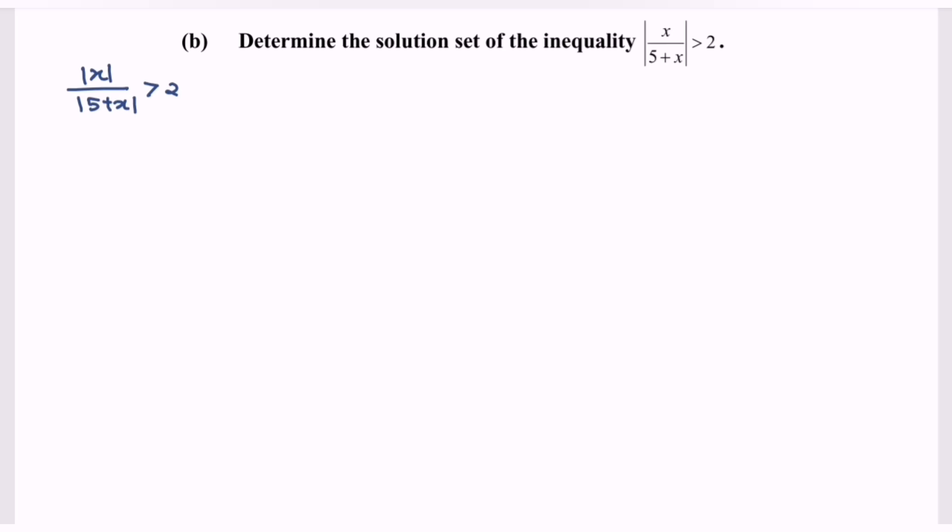We are allowed to cross multiply if the situation is always positive, and we will have modulus of x greater than 2 multiplied with the modulus of 5 plus x.